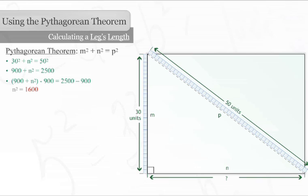Sixteen hundred equals forty times forty or forty squared. When we take the square root of both sides, we find that N equals forty.